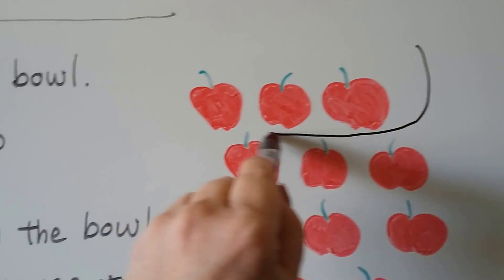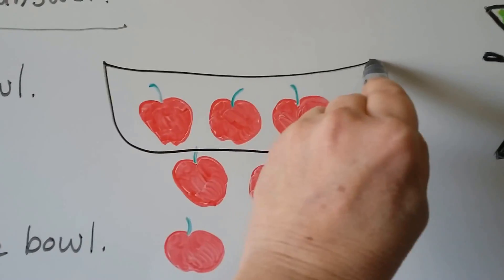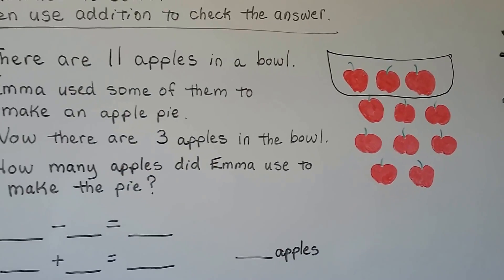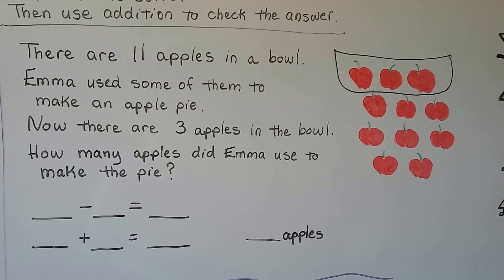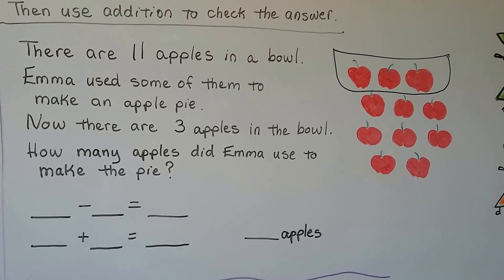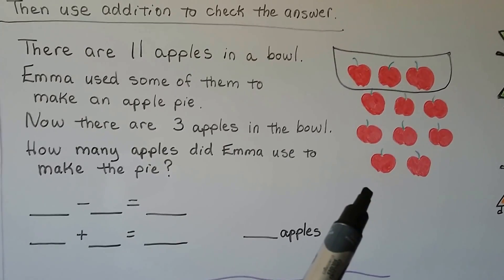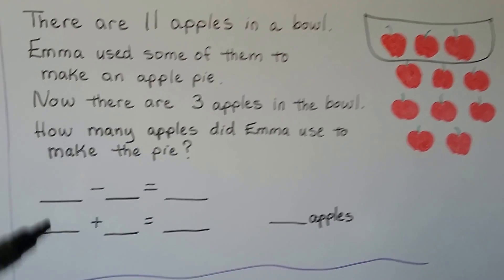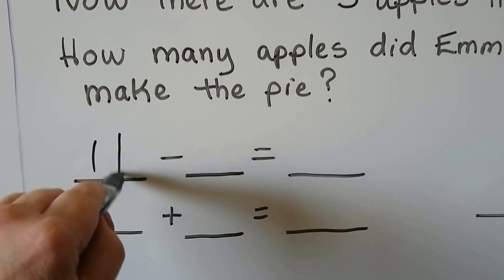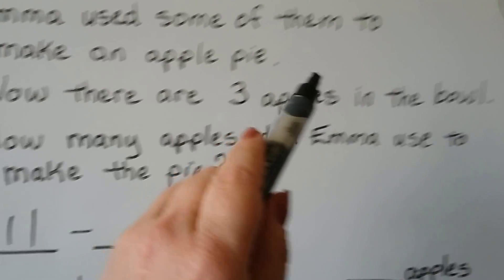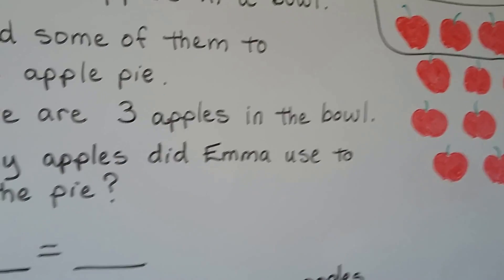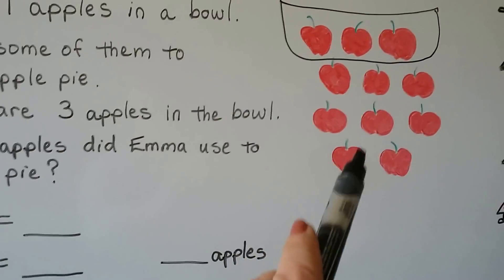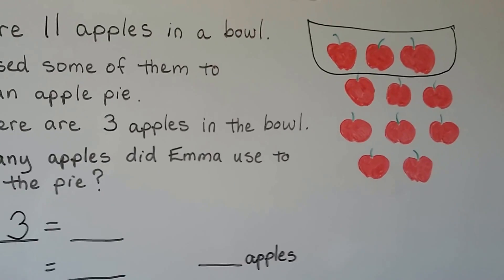If we draw a picture, here's the bowl with the three apples still in it. We can start with eleven for our subtraction problem — that will be the minuend — and take away the three apples that are still in the bowl.